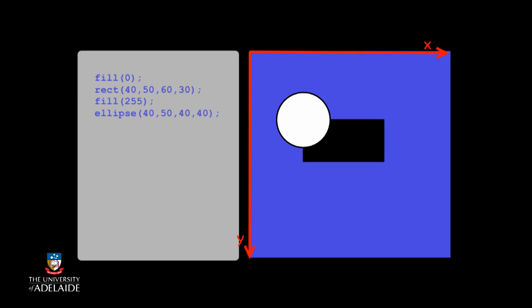If we want to disable the fill completely, then we will need to use a function that is called noFill. For example, if we want to draw a triangle without any fill on top of our previous shapes, we will call noFill and then draw our triangle.